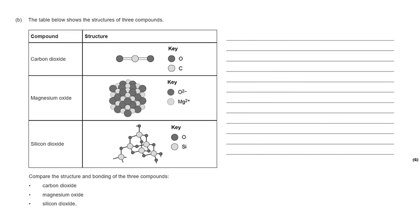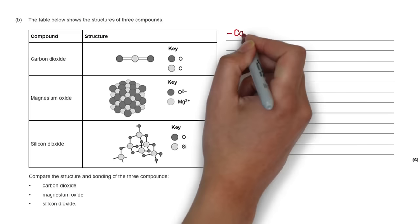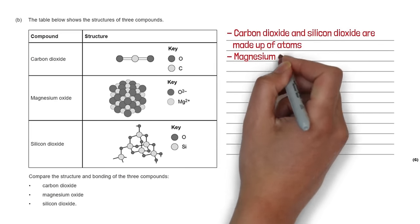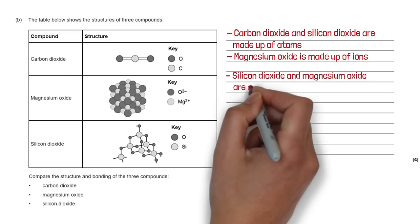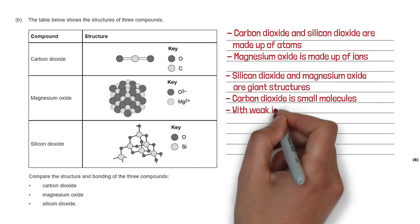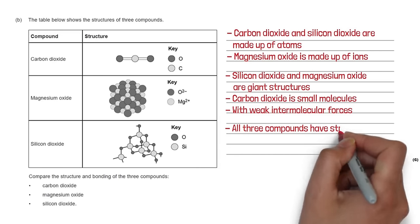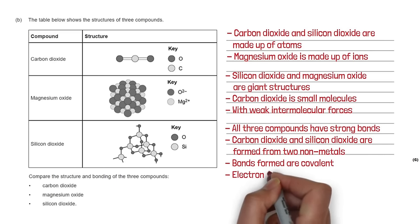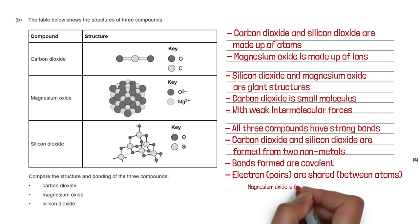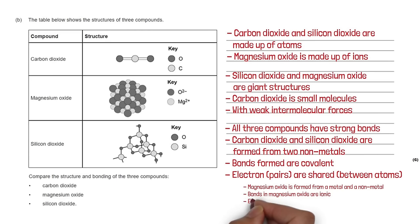A question asks us to compare the structure and bonding of three carbon compounds: carbon dioxide, magnesium oxide, and silicon dioxide. Carbon dioxide and silicon dioxide are made of atoms, whereas magnesium oxide is made of ions. Silicon dioxide and magnesium oxide are giant structures, while carbon dioxide is made of small molecules with weak intermolecular forces. All three have strong bonds. CO₂ and SiO₂ are formed from two non-metals so their bonds are covalent — electrons are shared. Magnesium oxide is formed from a metal and non-metal, so its bonds are ionic — two electrons are transferred from magnesium to oxygen.